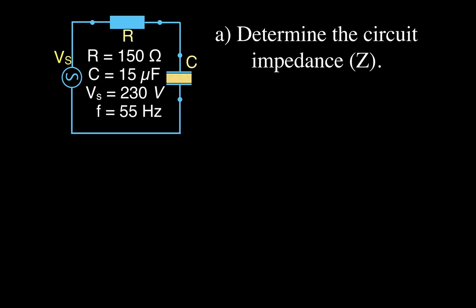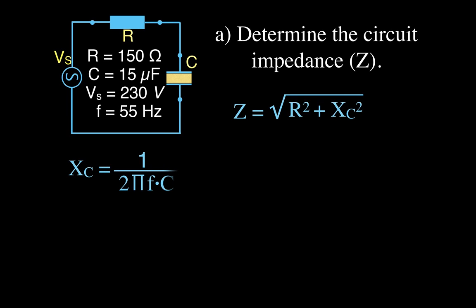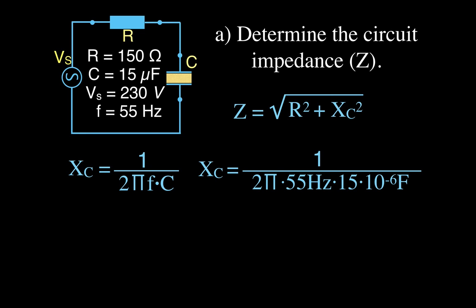We're going to determine the circuit impedance. Here is the circuit diagram and the given information. To calculate circuit impedance, we use Z equals the square root of R squared plus XC squared. Since we know the capacitance but not the capacitive reactance, we calculate XC first: XC equals 1 over 2 times pi times frequency times capacitance — that's 1 over 2π times 55 times 15 times 10 to the minus 6 farads.